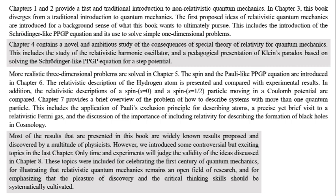More realistic three-dimensional problems are solved in Chapter 5. The spin and the Pauli-like PPGP equation are introduced in Chapter 6. The relativistic description of the hydrogen atom is presented and compared with experimental results. In addition, the relativistic descriptions of a spin-0 and a spin-1/2 particle moving in a Coulomb potential are compared.